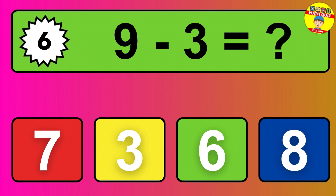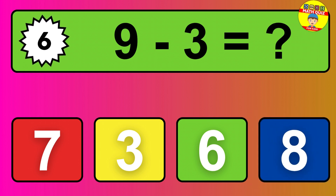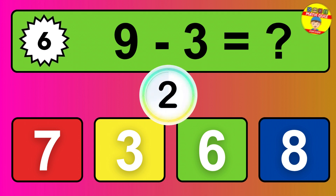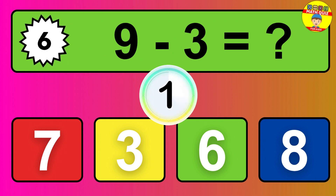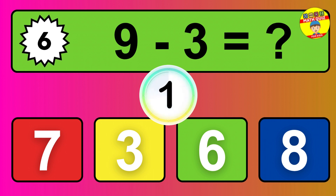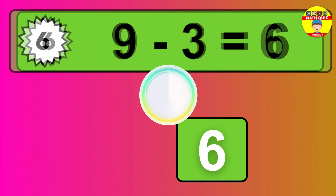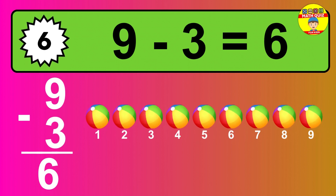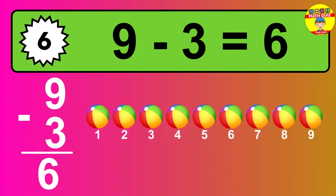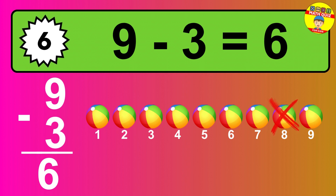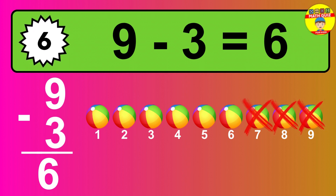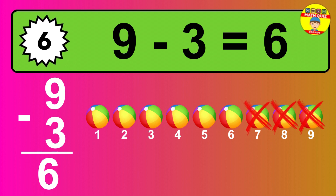Question 6: 9 minus 3 equals what? The answer is 9 minus 3 is 6. Let's count it: 1, 2, 3, 4, 5, 6.